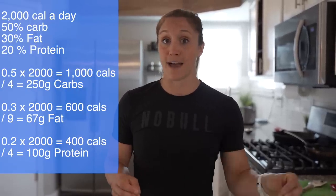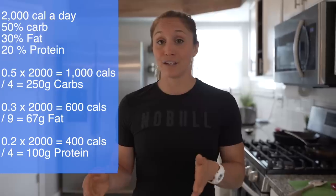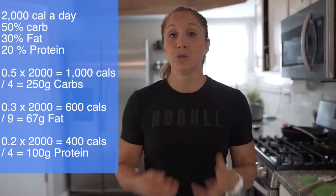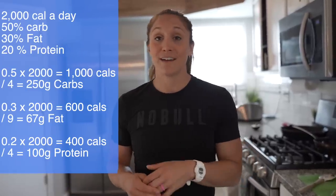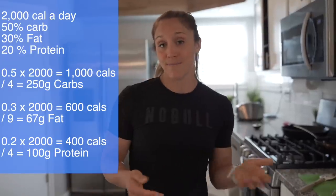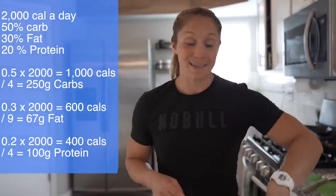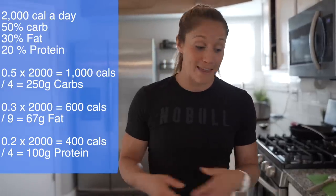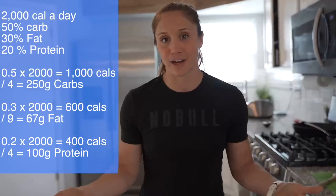First, we have to figure out your caloric needs, then we can break them into percentages. For example, say you're on a 2,000 calorie diet and you want 50% carbs, 30% fats, and 20% protein. Take 2,000 calories multiplied by 0.50 — that gives you 1,000 calories from carbohydrates. Divide 1,000 by 4 calories per gram and you get 250 grams of carbohydrates. For fats: 30% of 2,000 is 600, divided by 9 calories per gram, gives you approximately 67 grams of fat.